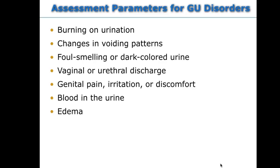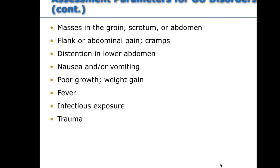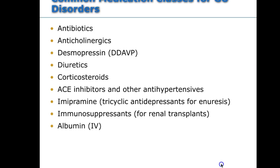Also look for any masses in the groin, one testicle larger than the other, flank or abdominal pain, distention possibly from ascites related to renal failure, nausea, vomiting, poor failure to thrive, any infectious exposure, and prenatal infectious exposure.